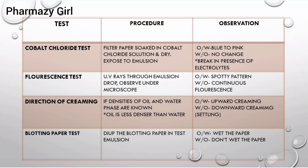The last test is the blotting paper test. In this test, a blotting paper is taken and dipped in the test emulsion. If the blotting paper is found wet, then the emulsion is oil in water type, because water is present in the continuous phase. And if the test emulsion doesn't wet the blotting paper, then it is water in oil emulsion. Hope you liked the video, keep watching.